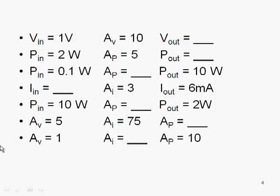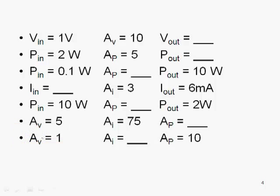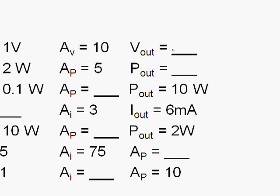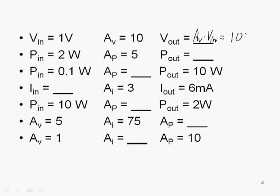So here's a few examples. Using the equations from the previous slide, we want to fill in the blanks. If we have an input voltage of one volt going into an amplifier with a voltage gain of 10, the output voltage is going to be equal to AV times Vin. So 10 gain times one volt gives us 10 volts at the output.